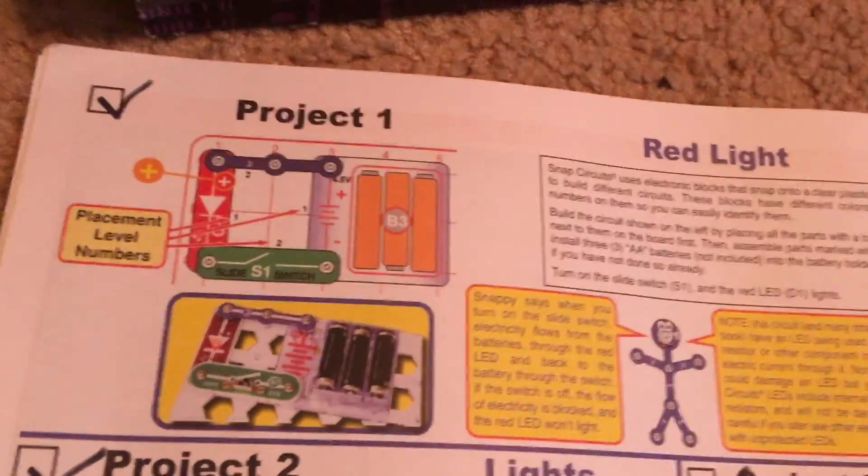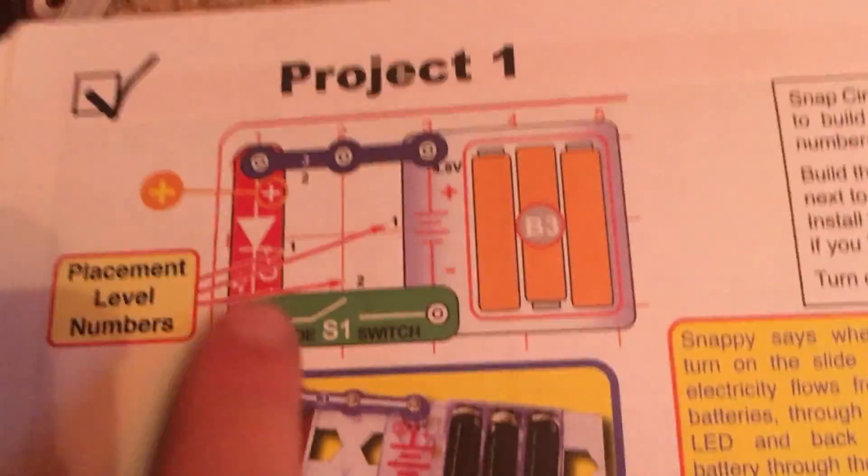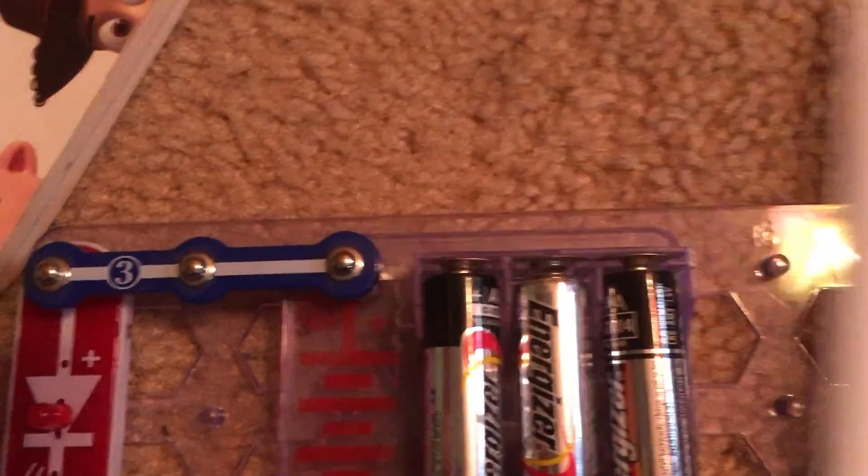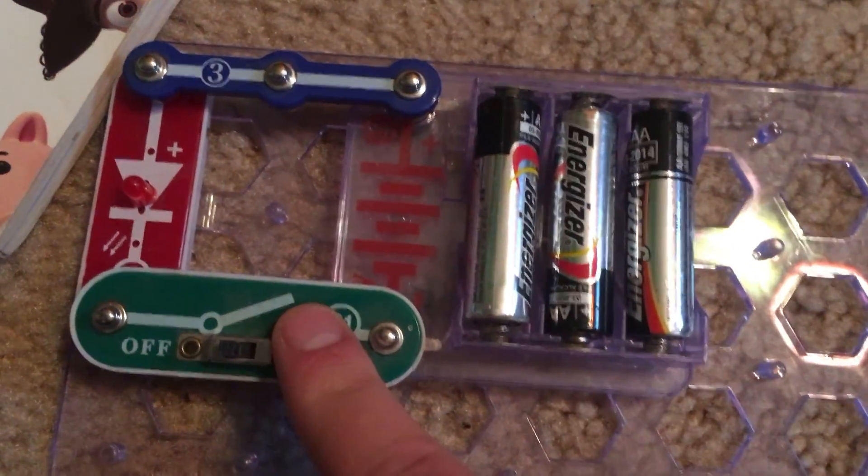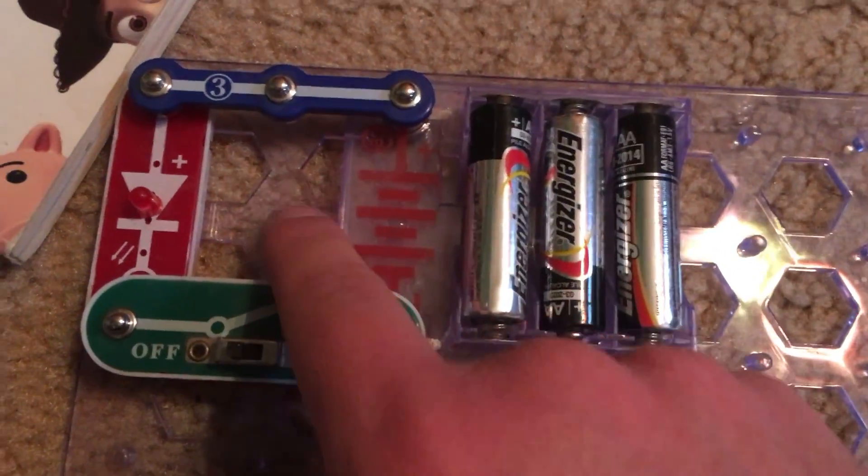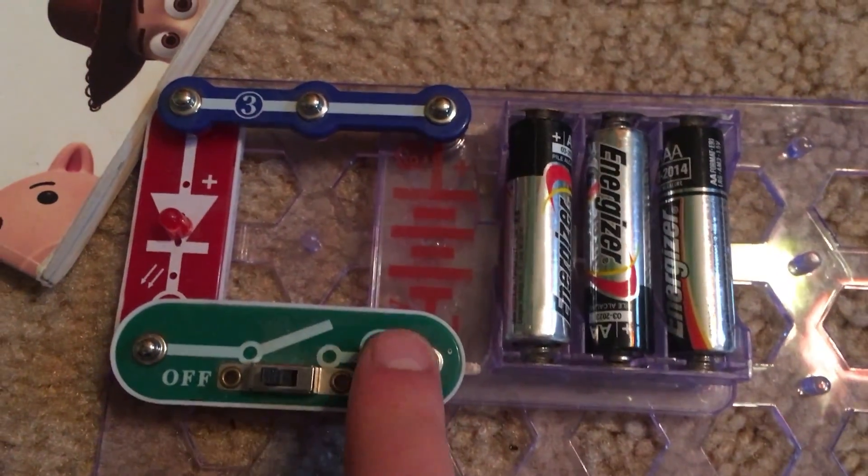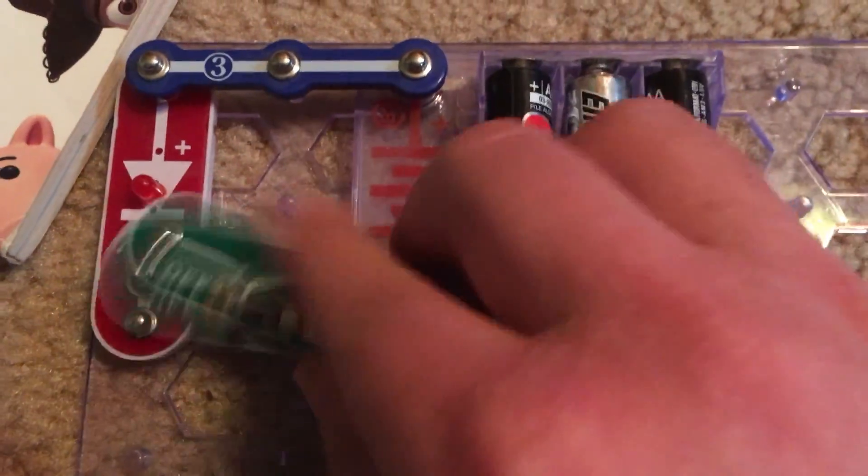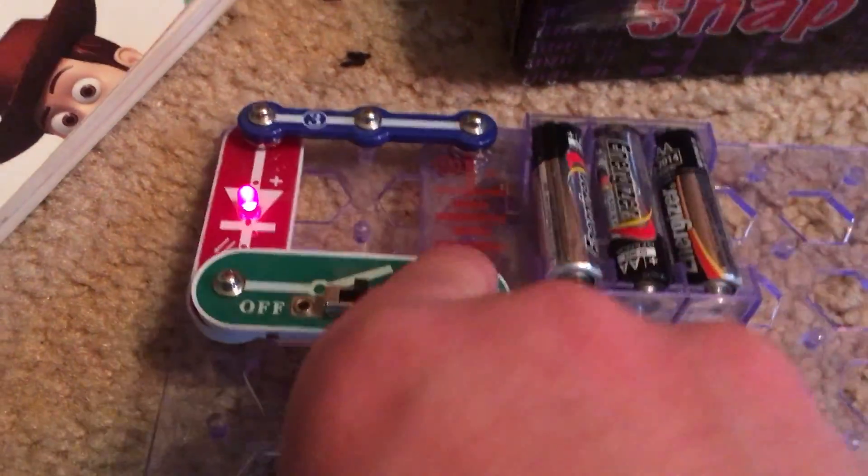First, we have Project 1. This project is very simple, and it is called Red Light. Something I did not tell you in the intro video is that there are numbers listed next to the parts showing you which level they go on. The red LED and battery holder, for instance, go on the first level, while the slide switch and 3-snap wire go on the top, on the second level. The parts themselves are numbered. The switch is S1 and the LED is D1. The grid is numbered and lettered as well.